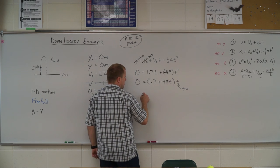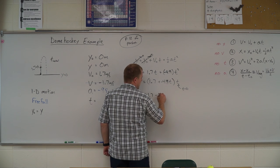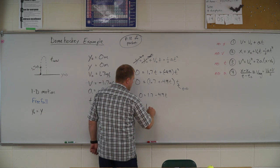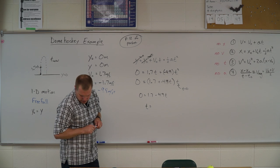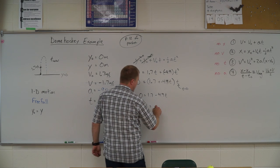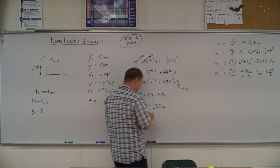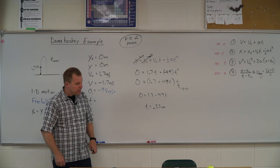So we solve for that one. We end up with zero is equal to 1.7 minus 4.9 t. That's the solution we're looking for. So we solve for t here, and you get a time of 0.35 seconds about. That's pretty fast. So about a third of a second, you got to be in on that time.